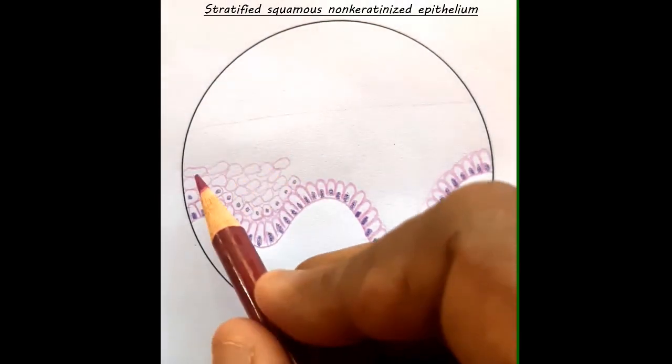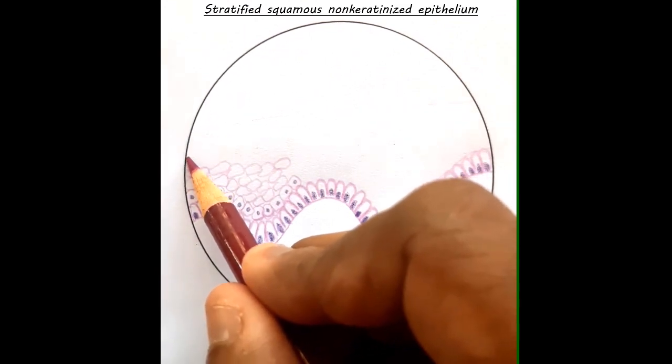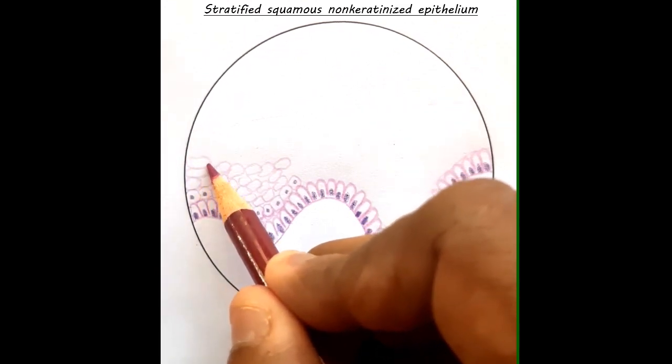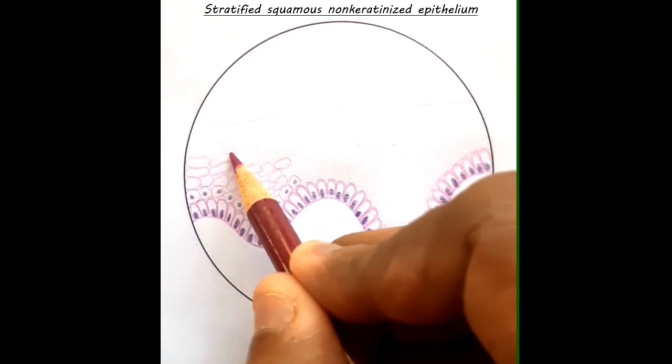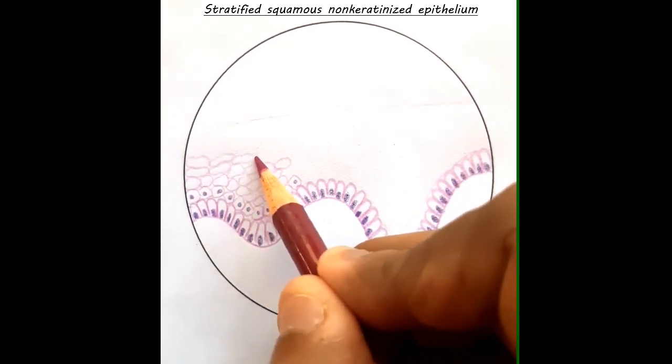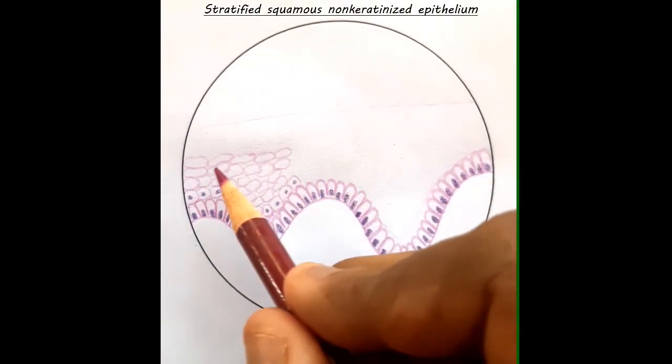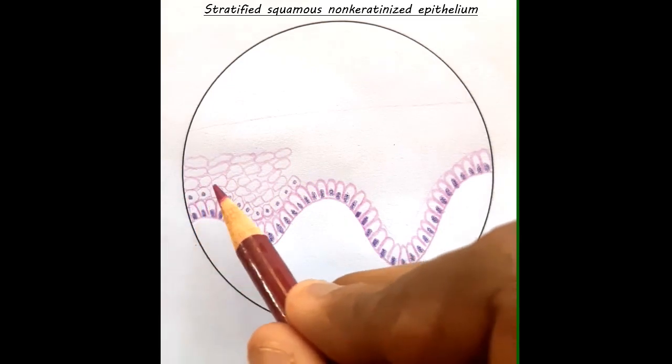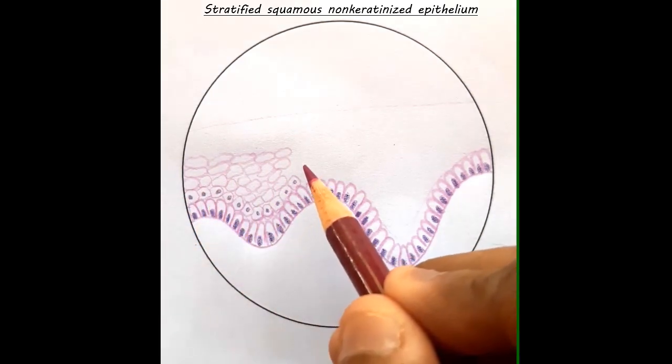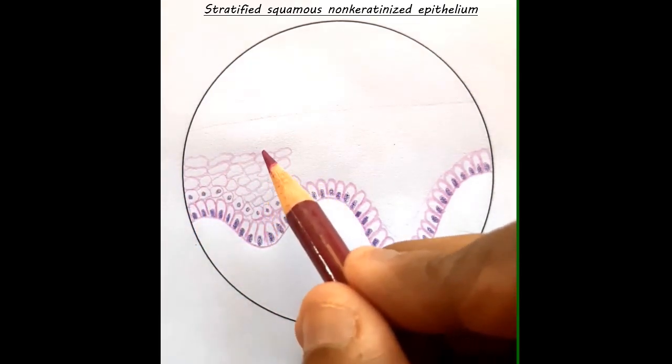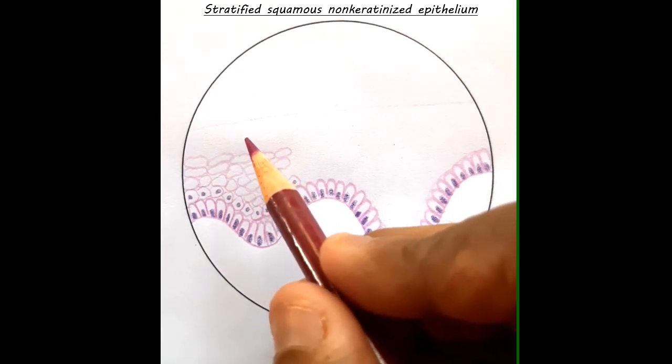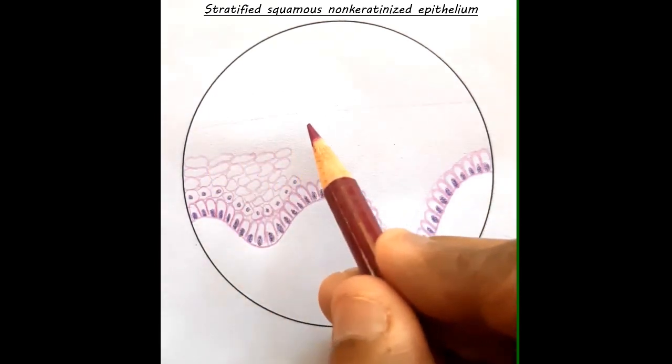The next layer compared to the previous layer, the cells are assuming a much more flattened out appearance. So if you look at the layers from bottom to top, you can see this transition in shape. As you go higher and higher up and reach the upper layers, it will become squamous or flat shape.